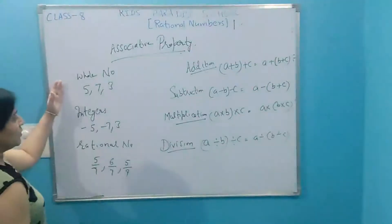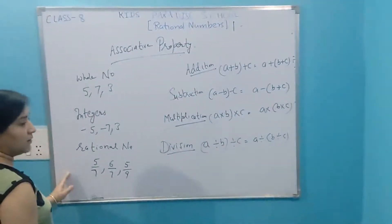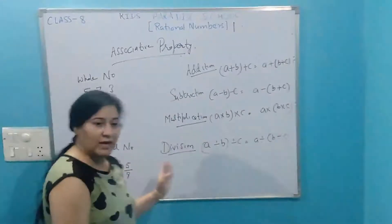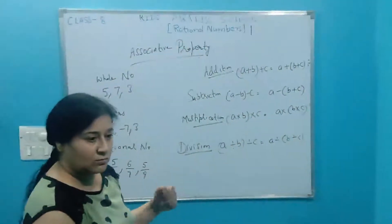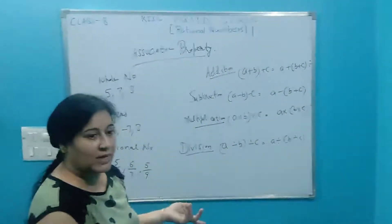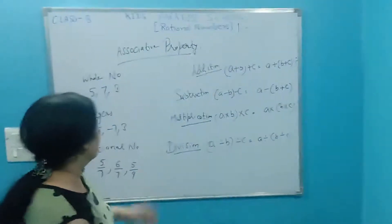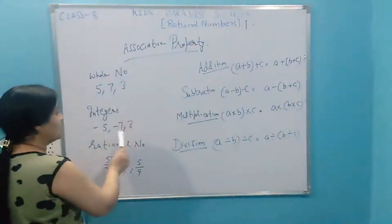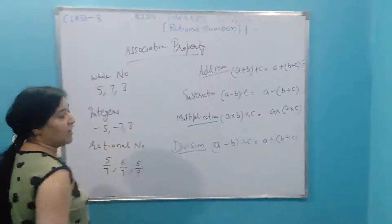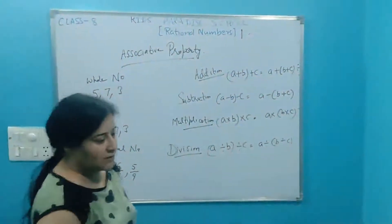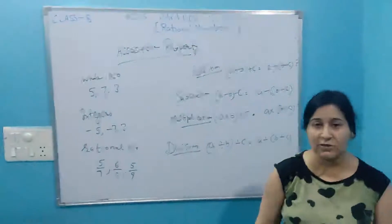I will show you the associative property for addition, subtraction, multiplication, and division applied to whole numbers, integers, and rational numbers, similar to how we covered the commutative property and the closure property. Thank you.